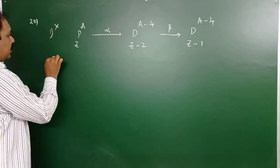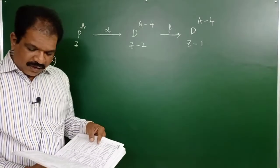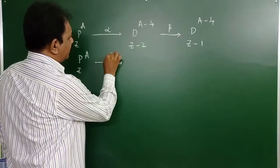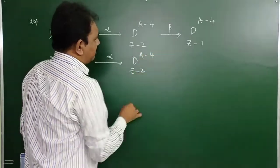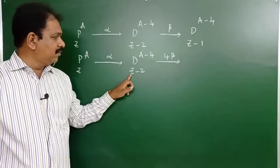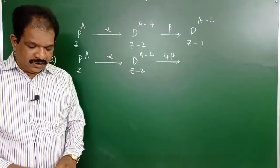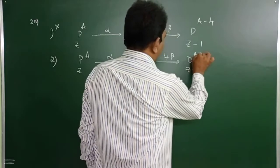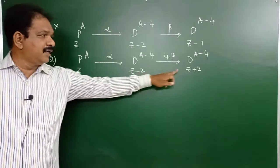Option 2: 1 alpha + 4 beta. After 1 alpha: Z−2, A−4. After 4 beta: Z−2+4 = Z+2, A−4. Atomic numbers Z and Z+2 are not the same, so this is not the answer either. Option 3: 4 alpha + 1 beta gives Z−8+1 = Z−7, A−16. Not matching. Option 4: 1 alpha + 2 beta gives Z−2+2 = Z, A−4. Atomic numbers are the same, mass numbers are different — those are isotopes. Answer is option 4.